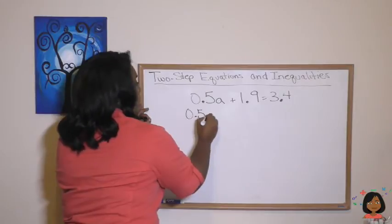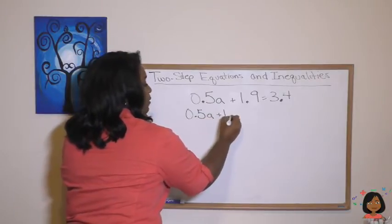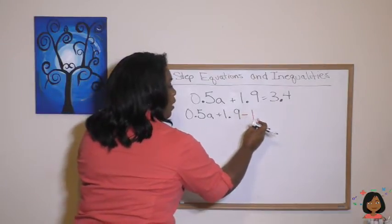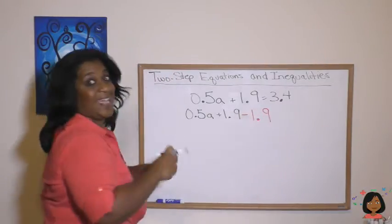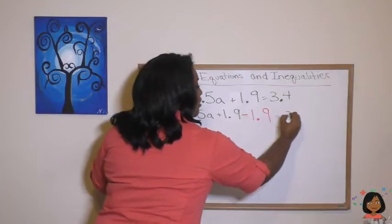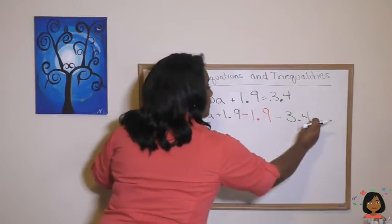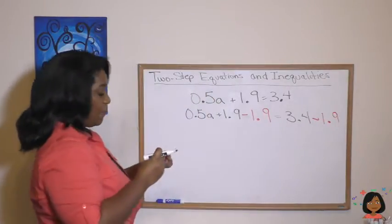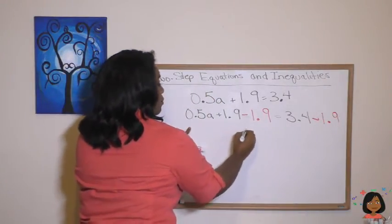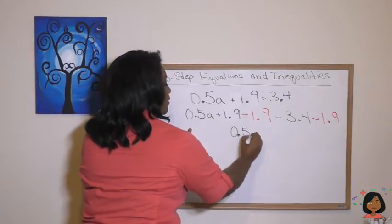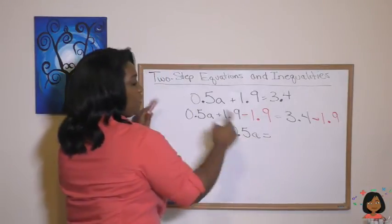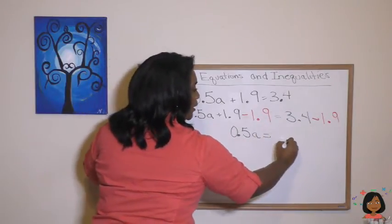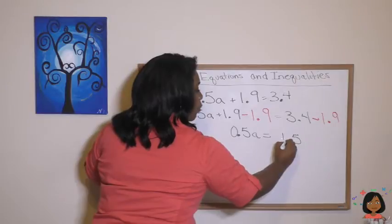So let's subtract 1.9 from both sides of the equation. Now I'm going to write it out so you can see it. Once you get good at this, you don't have to write it the long way, but hey, we're just starting out, right? Let's do it in red. Minus 1.9 equals 3.4 minus 1.9. There is step one. Now let's combine 0.5a equals, we're going to do 3.4 minus 1.9, and that's going to be 1.5.